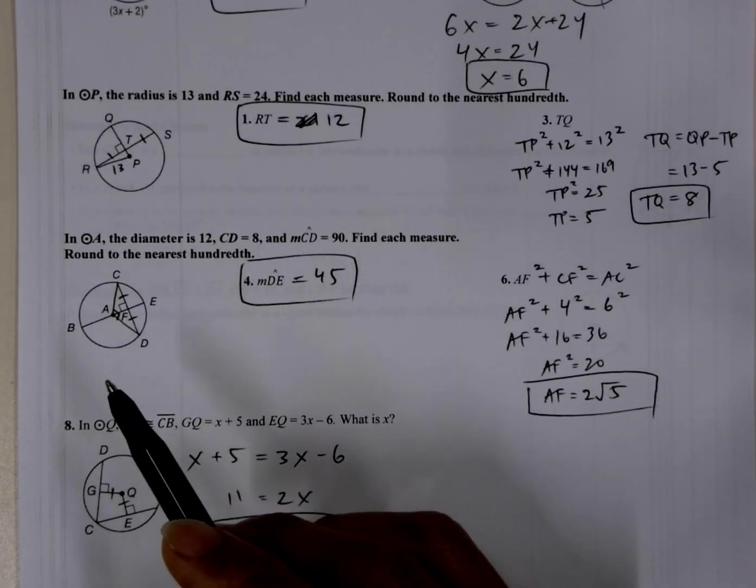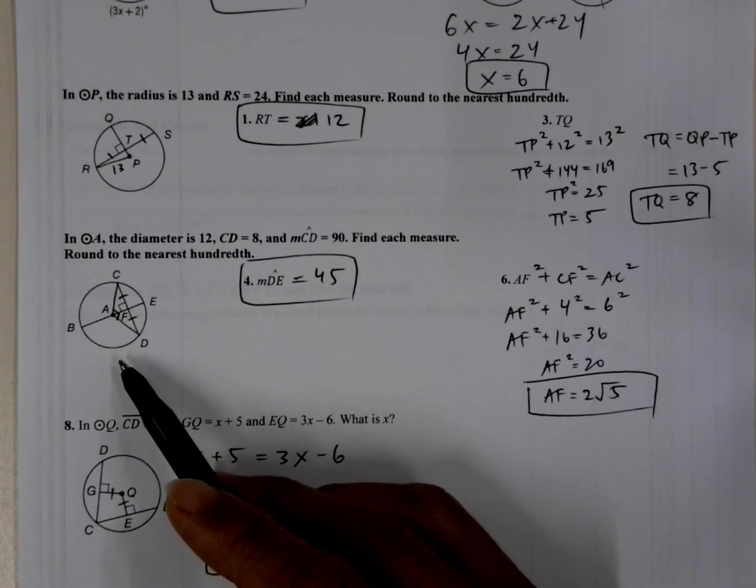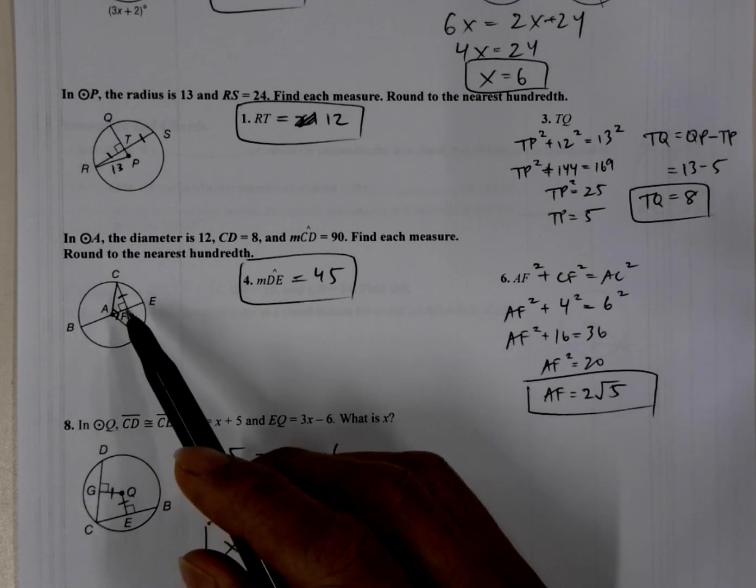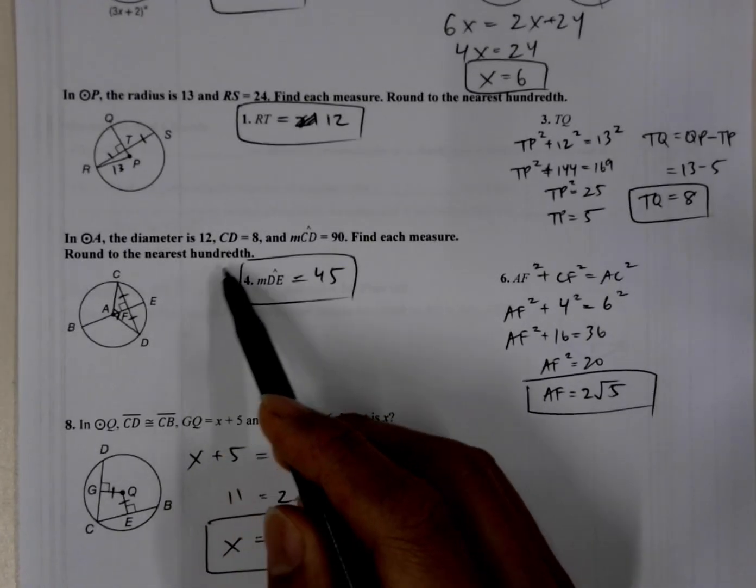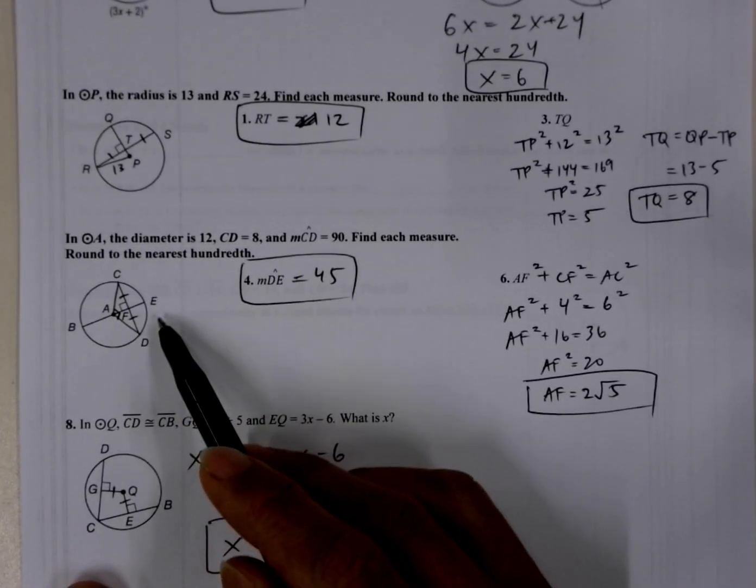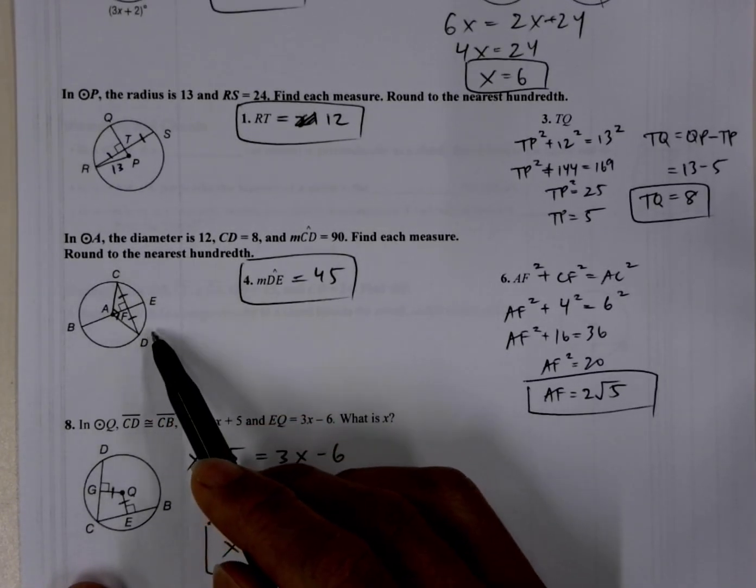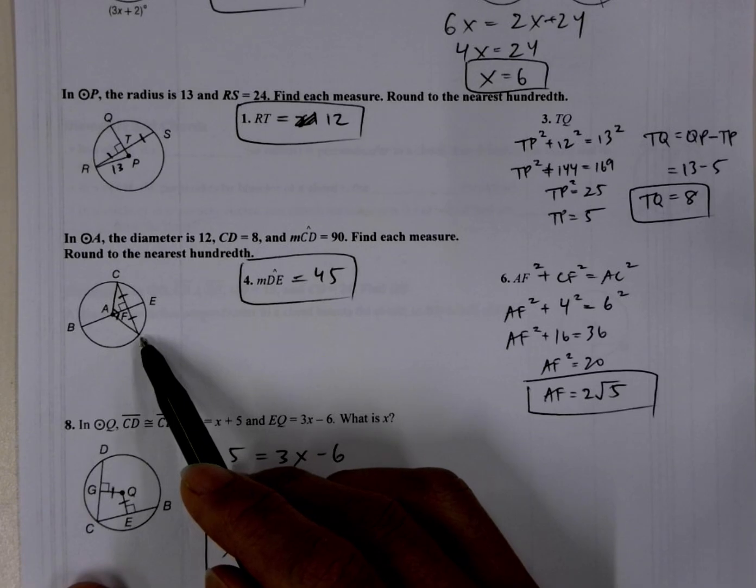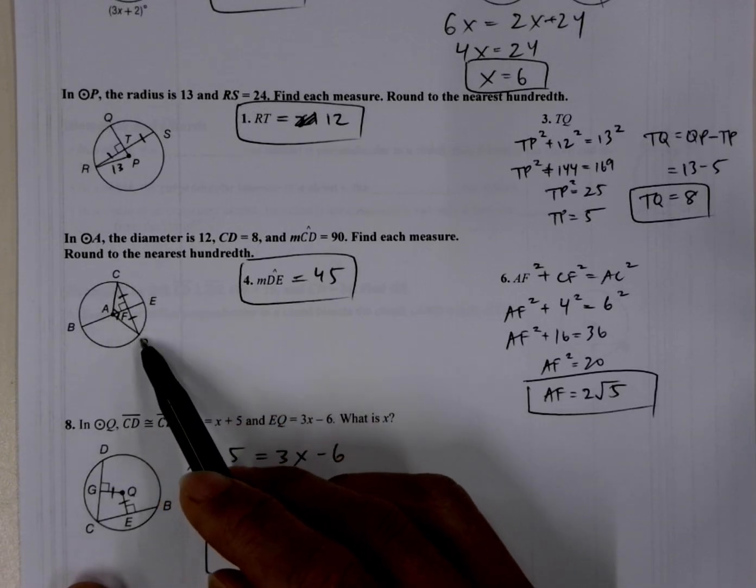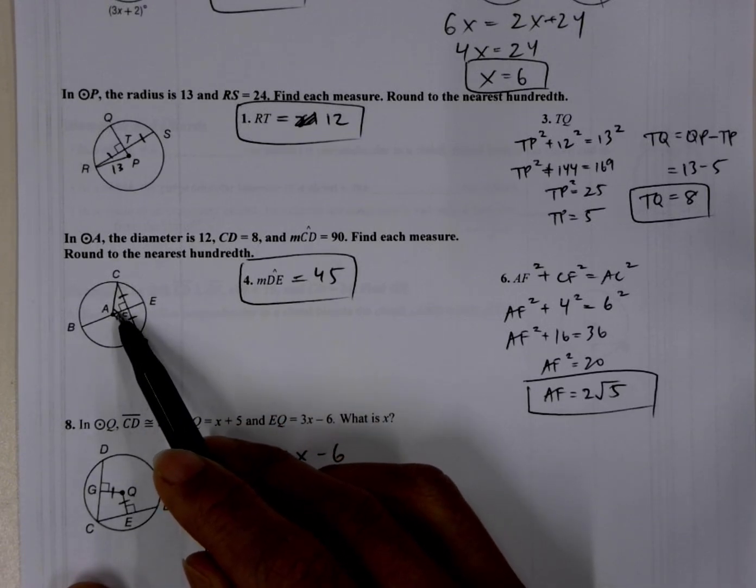So over here, this one's a little tricky because the diagram isn't drawn accurately. And so what do we know? We know that CD, this arc, is 90 degrees. And if we go back one chapter, then we also know that the inscribed angle or the central angle, CAD, is also 90 degrees.